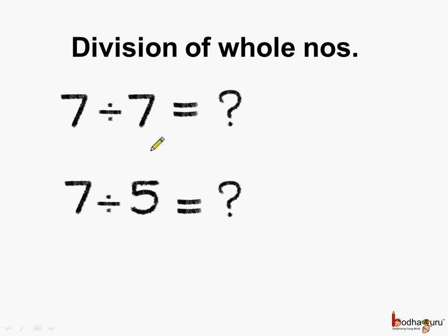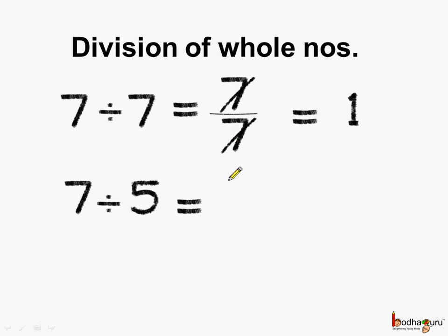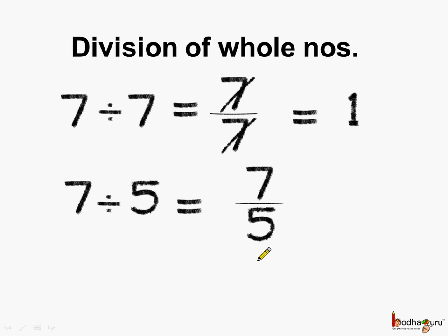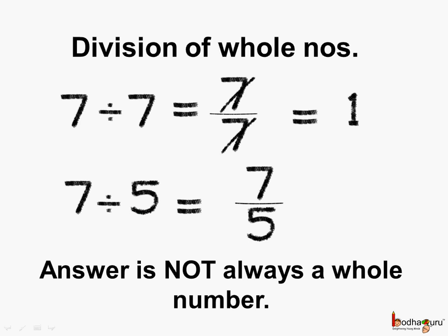What is 7 divided by 7 equal to? What is 7 divided by 5 equal to? If we do 7 divided by 7, it is equal to 1. But when we do 7 divided by 5, we cannot reduce it, so we get the answer as a fraction. Here the answer is 1, which is a whole number. But here the answer is not a whole number — we are getting a fraction. So we can say the answer is not always a whole number when we do division of whole numbers.